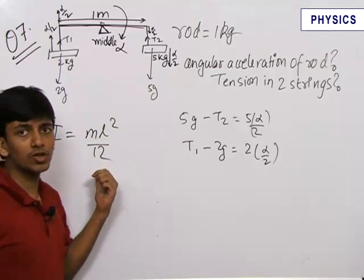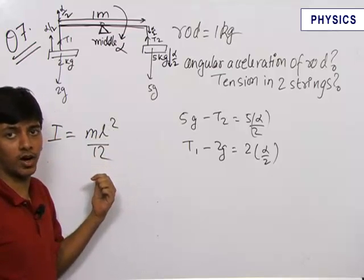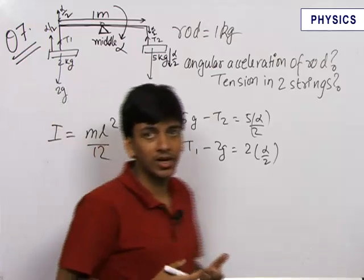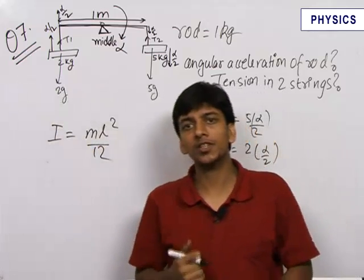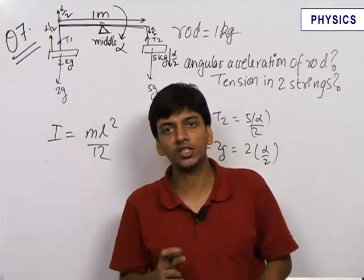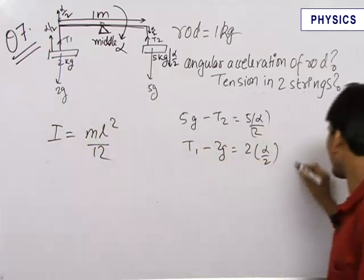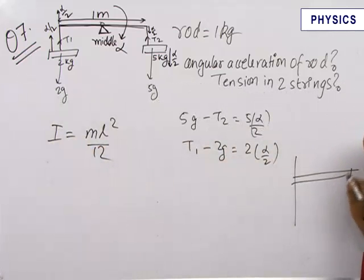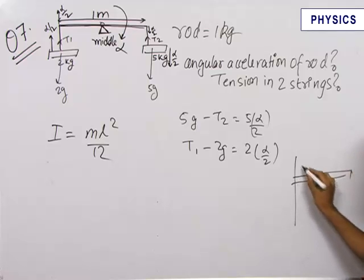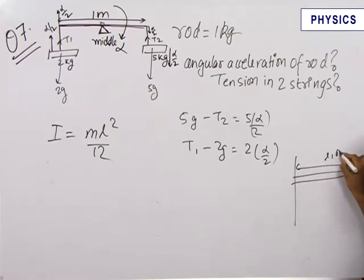You must remember these values of moment of inertia because you cannot proceed without them in these type of questions. There will be many questions in future, therefore it is best for you to remember all the values of moment of inertia of various things. Just like I will tell you one more, always remember that the moment of inertia of a uniform rod hinged at one of its ends of length L and mass m is mL square by 3.